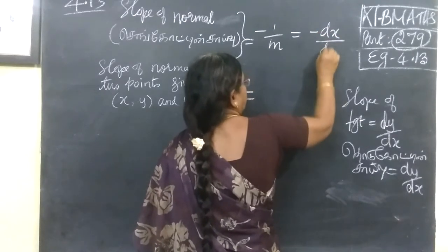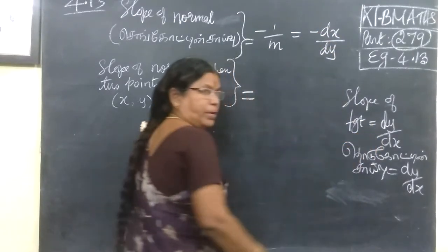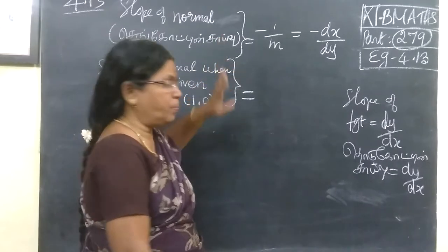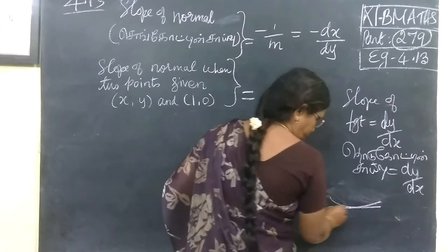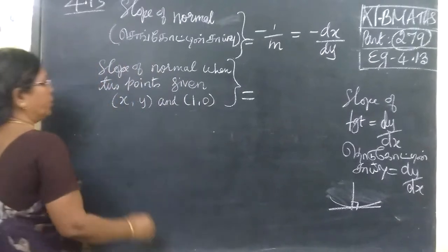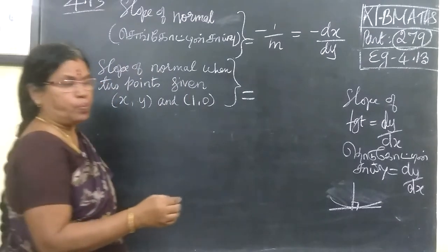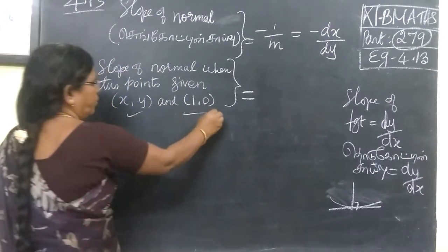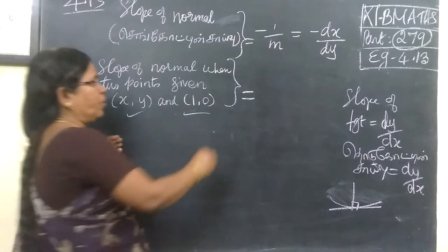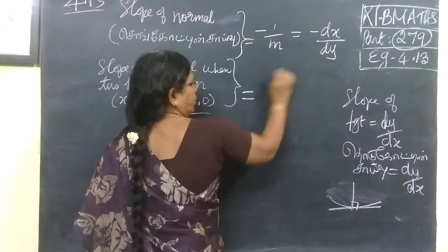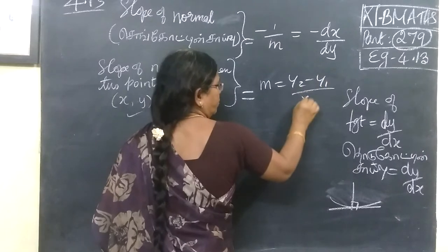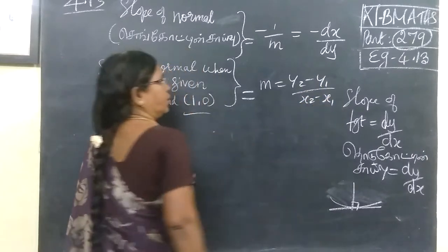Let me know the rule. dx by dy. This is dy by dx. Slope of normal is perpendicular, so slope of normal equals minus dx by dy. And if two points are given, this is the endpoint of the curve — that is the endpoint. When two points are given, slope of normal M equals Y₂ minus Y₁ by X₂ minus X₁.